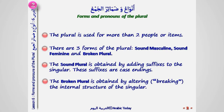The plural is used for more than two people or items. There are three forms of the plural: sound masculine, sound feminine, and broken plural. The sound plural is obtained by adding suffixes to the singular — these suffixes are case endings. The broken plural is obtained by altering or breaking the internal structure of the singular.